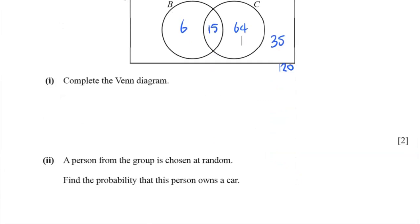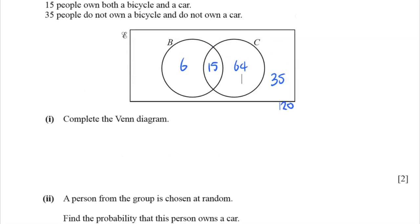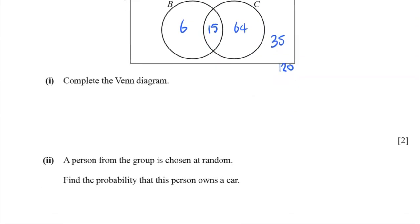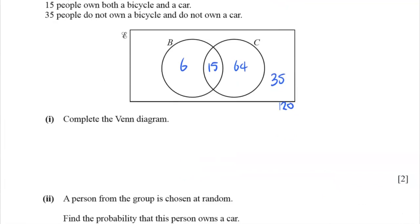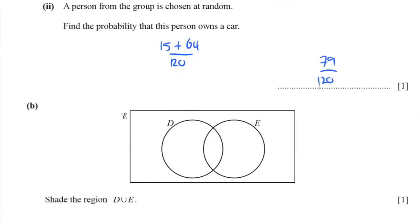A person from the group is chosen at random. What's the probability that the person owns a car? Well, we want to say, how many people own a car? The car circle is there. And so there's 64 plus 15 people who own a car. And 64 plus 15 is 79. So there are 79 people who own a car. But we're asking for the probability. So it's 79 out of 120. 79 looks like it's a fairly odd number. It's got no factors, so it just can stay there, I think.